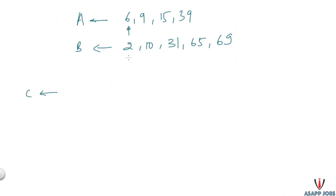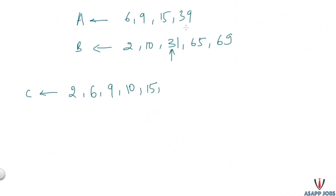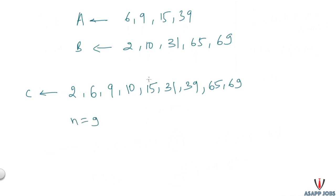Let's merge the arrays the same way we do in merge sort. We pick one element from A and one from B — here 6 and 2 — take the minimum and place it in array C. So 2 goes first, then we compare 6 and 10, placing 6 next, then 9 and 10, placing 9, and so on. Once we reach the last element of A, we put all remaining elements of B at the end of C. Now we have a sorted array C, and since the size is 9, our median value is 15.